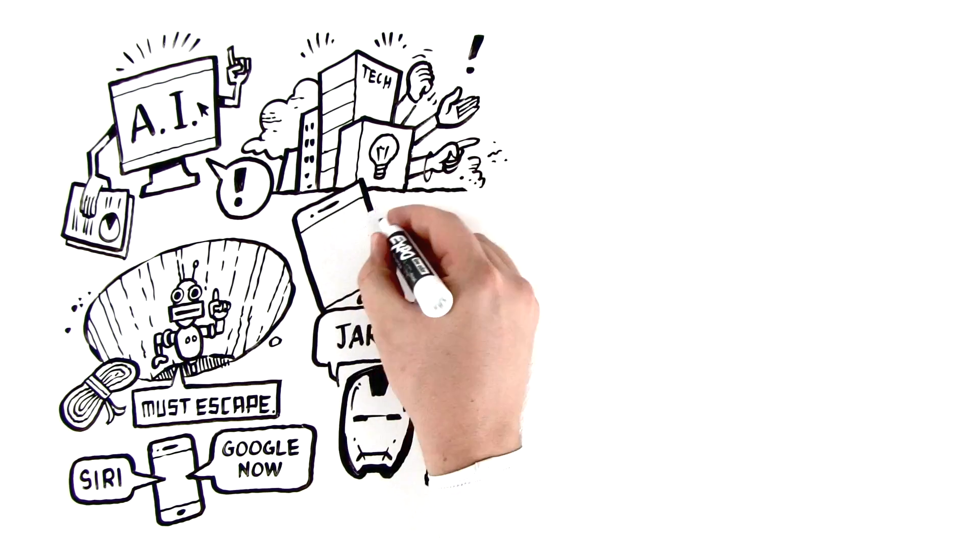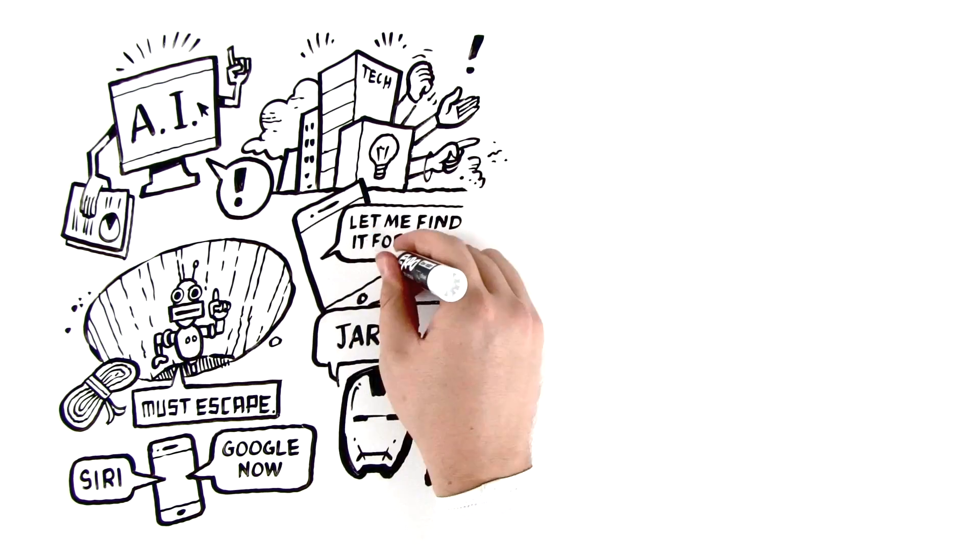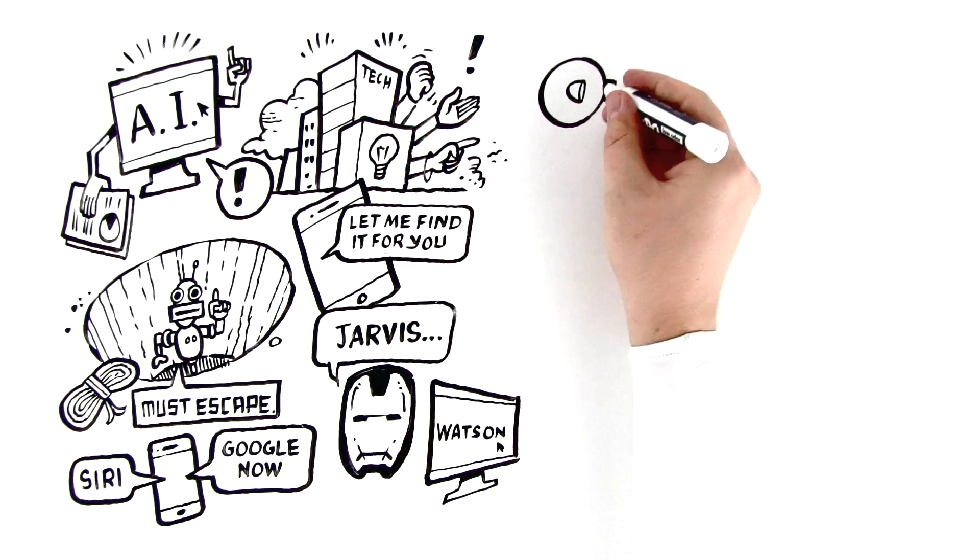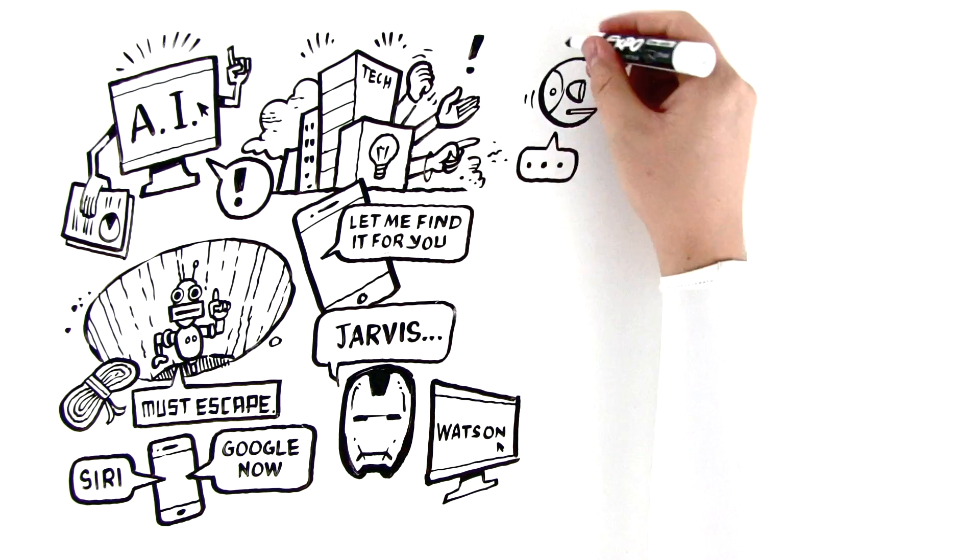AIs like Siri and Amazon Echo can listen and understand your commands. Other AIs can look at a scene and describe in detail exactly what they're seeing.